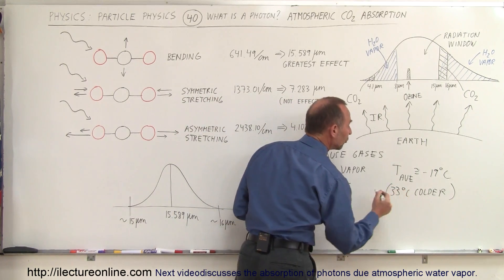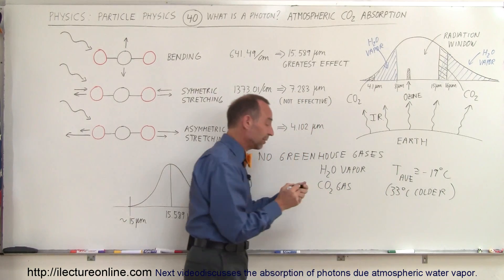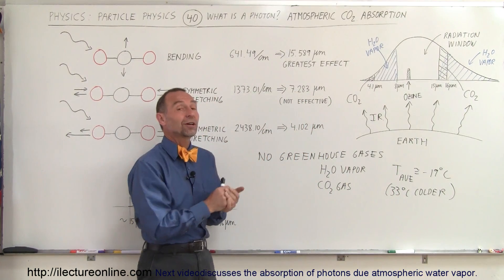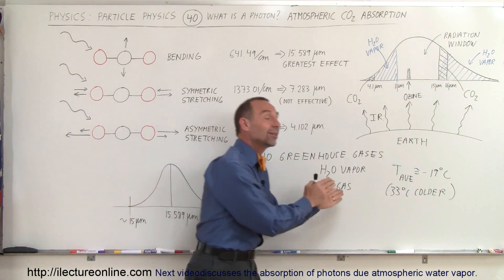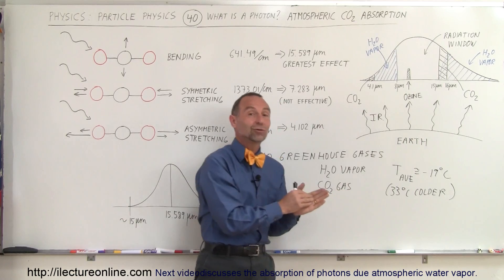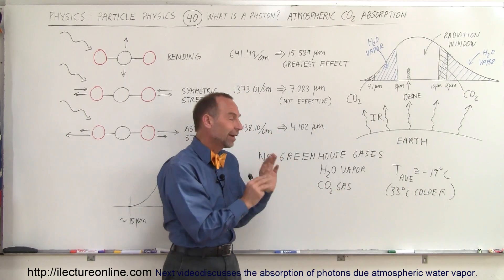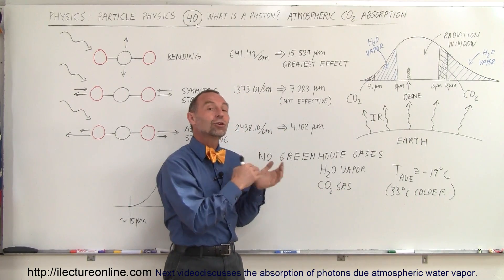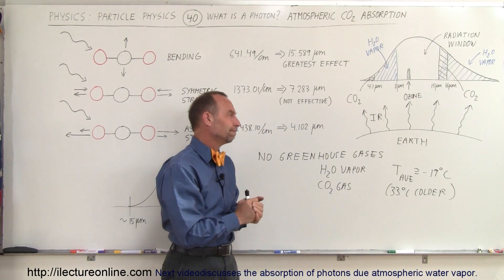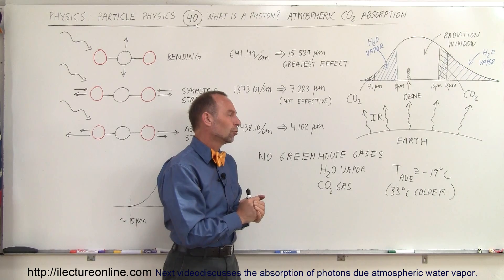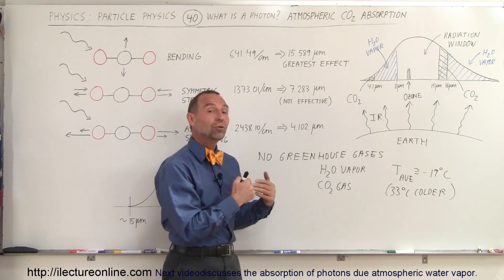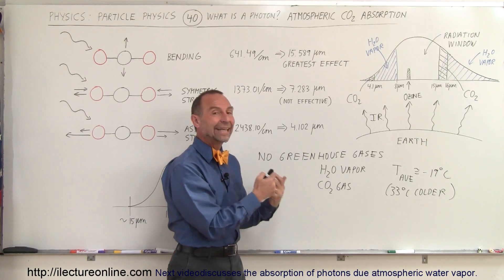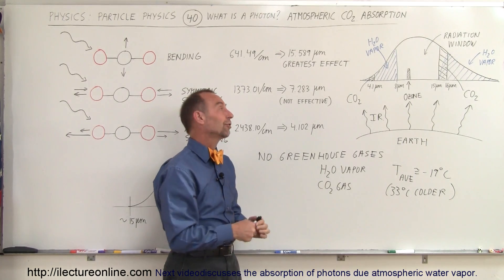Now, how much of that warming is due to water vapor, and how much is due to carbon dioxide? It turns out about 30 degrees of that is due to water vapor, and about 3 degrees is due to carbon dioxide. So the question then is, what happens when we put more carbon dioxide into the atmosphere?